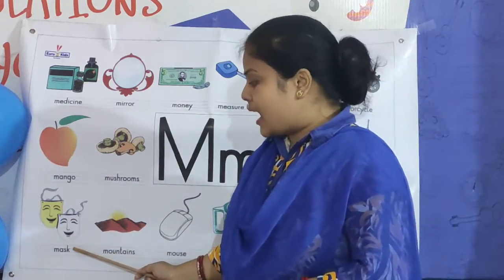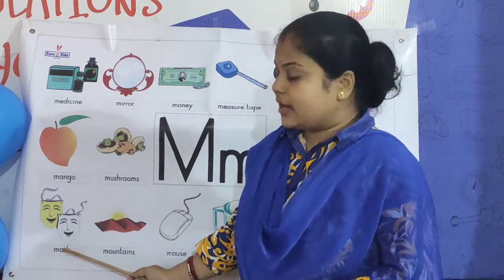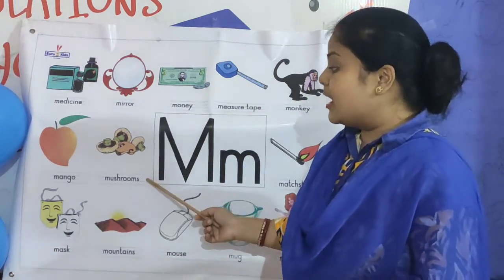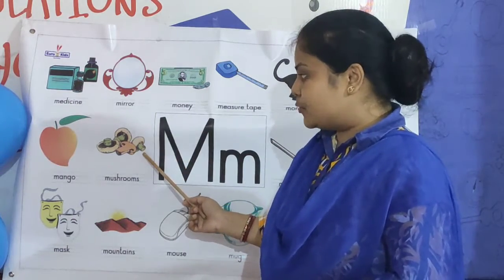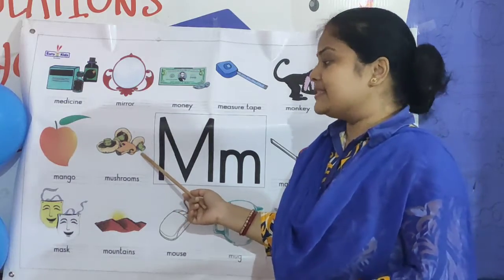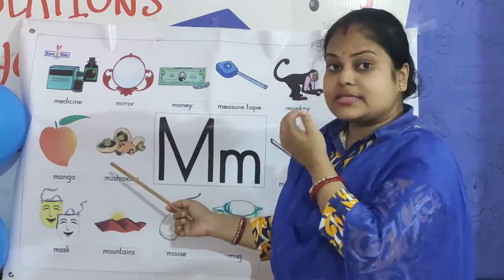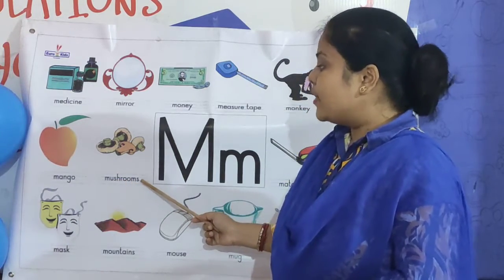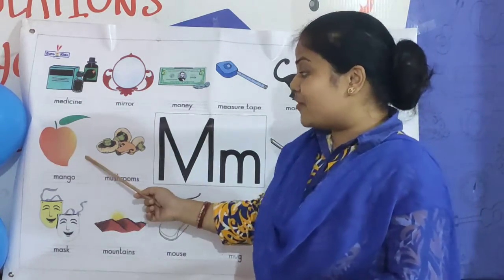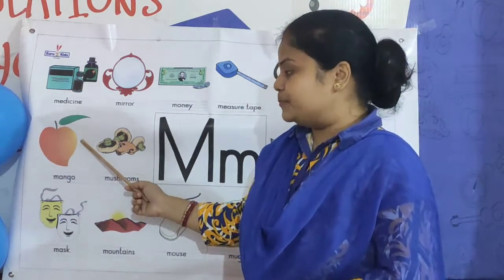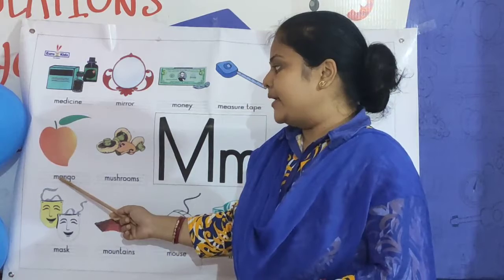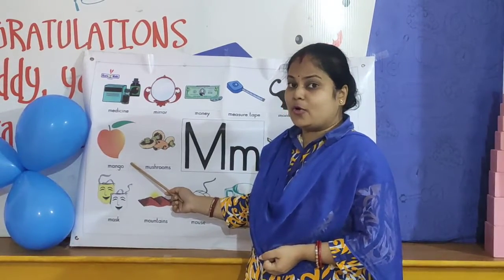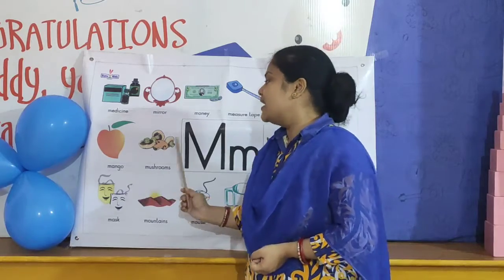And M for mask. What is the spelling of mask? M-A-S-K. Mask. And M for mushrooms. Children, do you eat mushrooms? Yes, it is a very tasty thing. What is the spelling of mushroom? M-U-S-H-R-O-O-M-S. Mushrooms. And M for mango. What is the spelling of mango? M-A-N-G-O. Mango — very tasty fruit. It is very yummy and delicious.